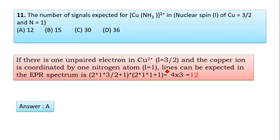the lines can be expected in EPR spectrum is 2×1×(3/2+1)×2×1×(1+1), that is 4×3 = 12. The answer is A, answer is 12.